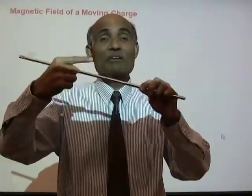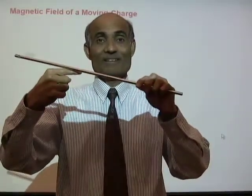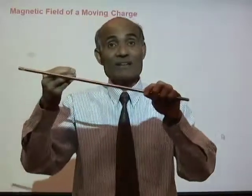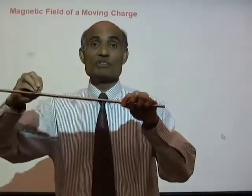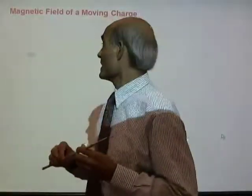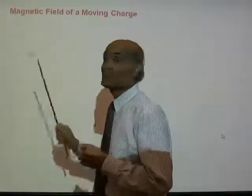In the last lesson, we found that a current in a conductor produces a magnetic field around it. This is the same as saying that a moving charge produces a magnetic field in a region that surrounds the moving charge. Today in this lesson we will talk about the magnetic field due to a moving charge and see how we can measure it.